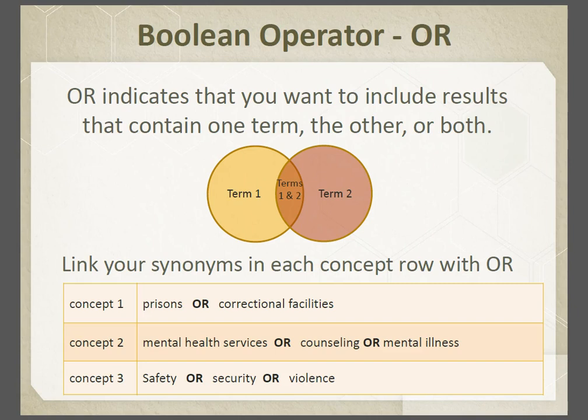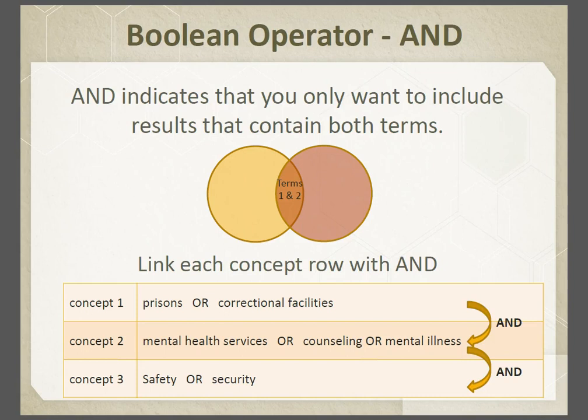Now we'll talk about Boolean operators. Link synonyms in each concept row with OR to indicate that you want to include results that contain one term, the other, or both. Next, link each concept row together using AND. This shows that you only want to include results that contain both terms.